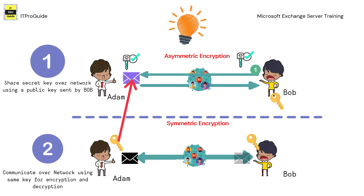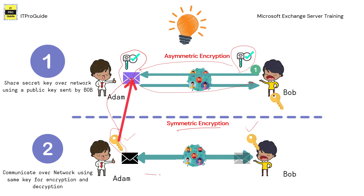Look at this picture. Bob wants to communicate with Adam. Bob first generates a key pair for asymmetric encryption and sends the public key to Adam. Adam has the secret key they wish to use in symmetric encryption for bulk data transmission. Adam encrypts that secret key using the public key provided by Bob and sends it back. Now both Bob and Adam have the same secret key, so they switch back to symmetric encryption and start communicating over the internet using symmetric encryption.